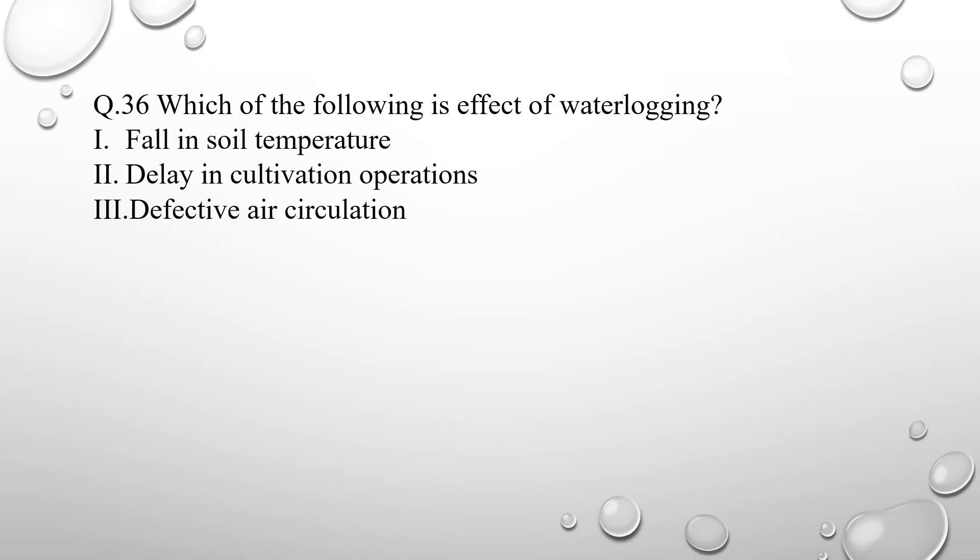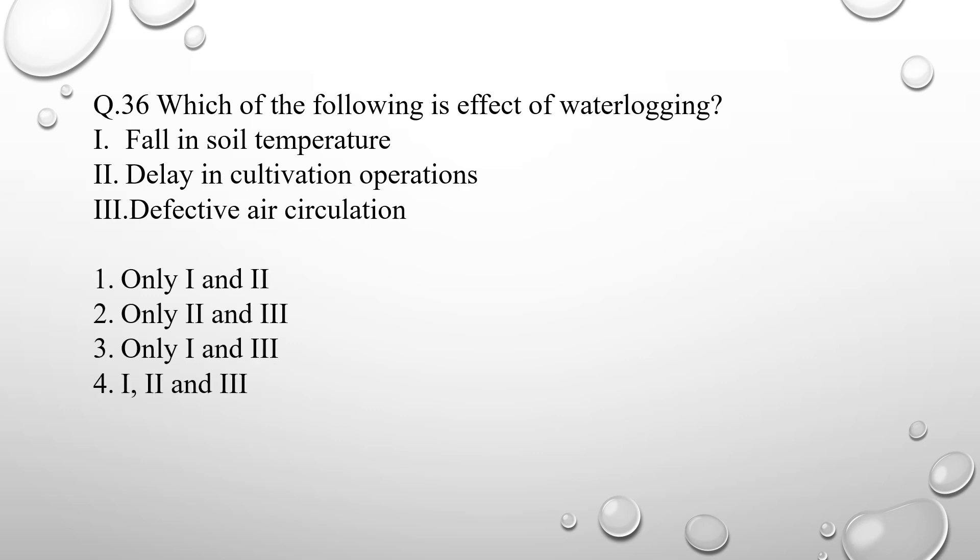Question number 36: which of the following is an effect of water logging? Option 1 — fall in soil temperature — is correct. Option 2 — delay in cultivation operation — is correct. Option 3 — defective air circulation — is also correct. All three are effects of water logging, so option number 4 (all of the above) is the correct answer.